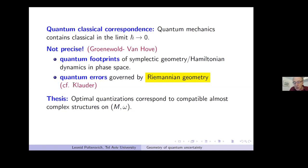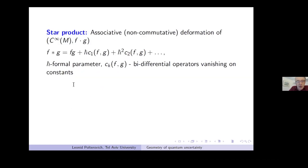These optimal quantizations turn out to correspond to compatible almost complex structures on the symplectic manifold — an object which, starting from Gromov's work, we like in symplectic geometry. Let me try to discuss this thesis in more detail.